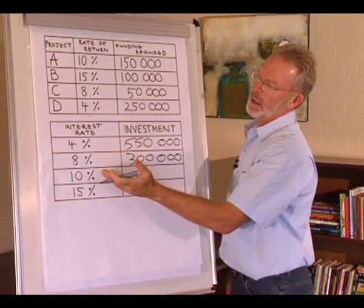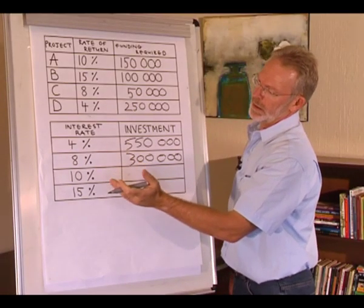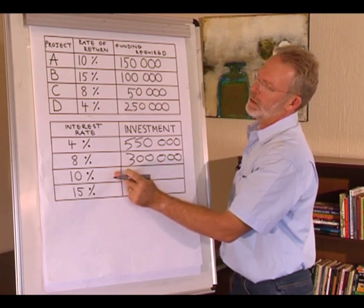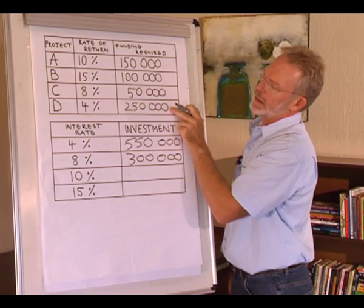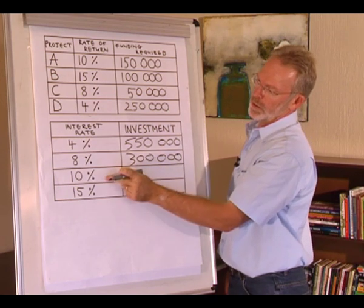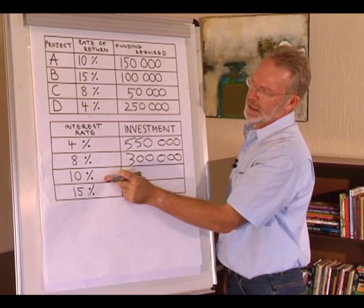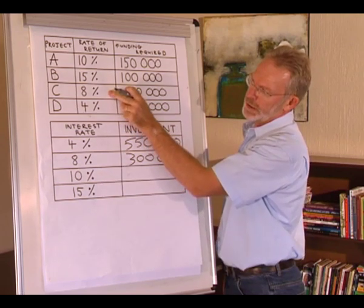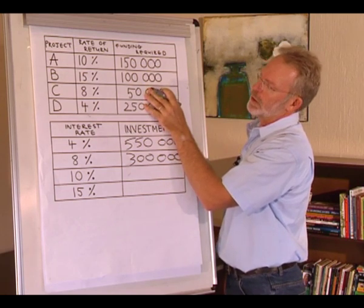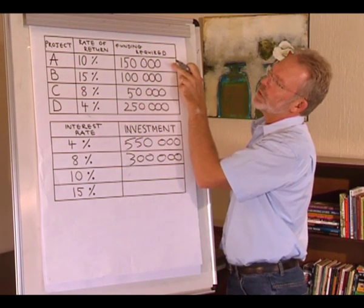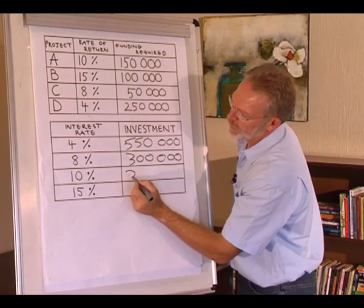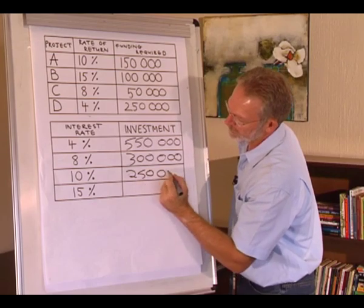We can do the same with interest rates of 10% and 15%. At 10%, projects C and D are not viable. The cost of borrowing is 10%, while their expected rates of return are 8% and 4% respectively. So these two projects are not viable, and investment will only be $250,000.